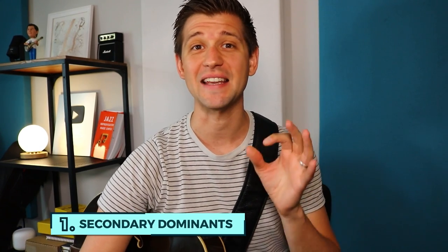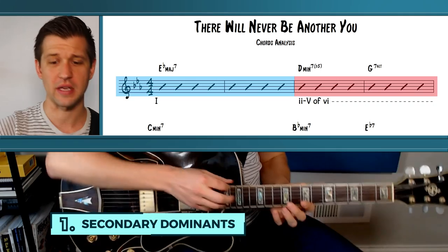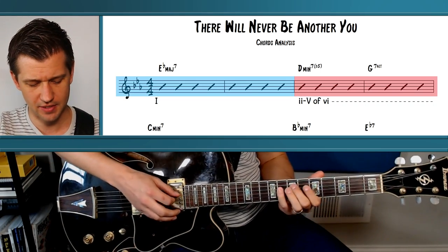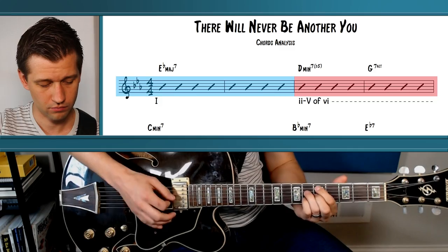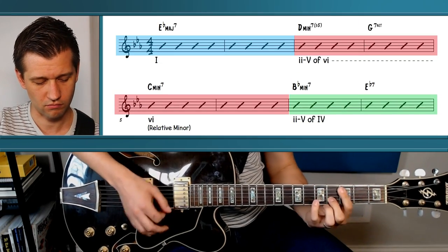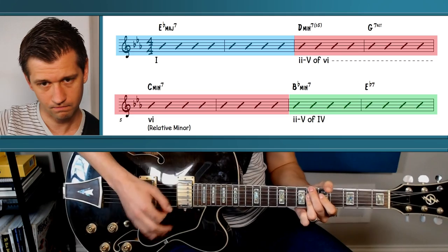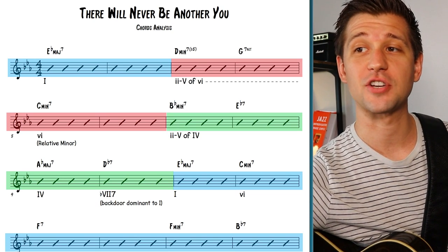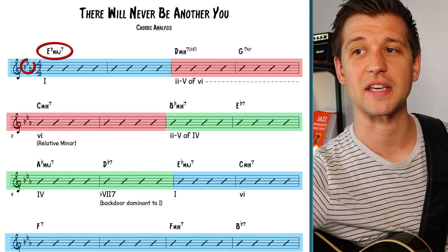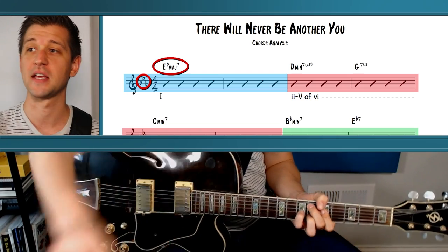The first music theory concept you really need to know is secondary dominance. Taking a look at 'There Will Never Be Another You,' we have an E flat major seven that starts here, and this is what the key of the song is in — it's in concert E flat major.